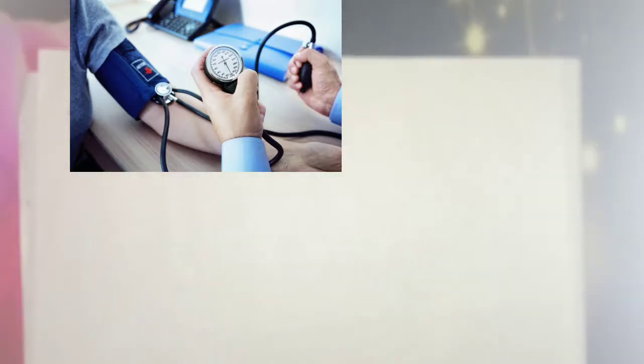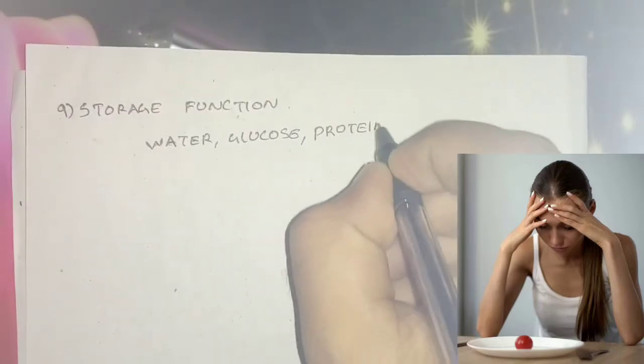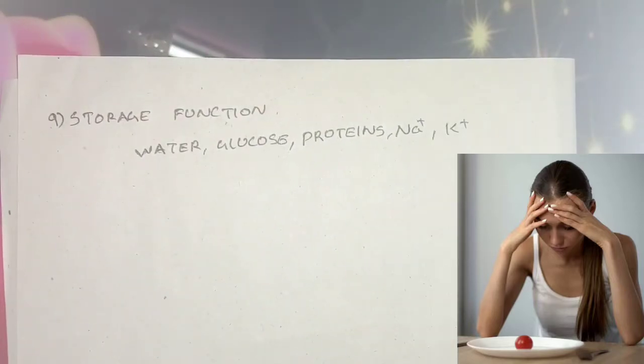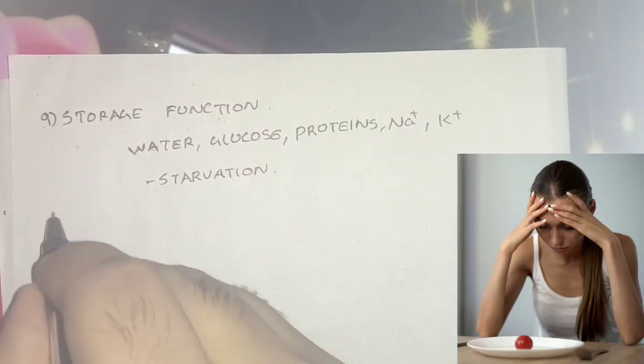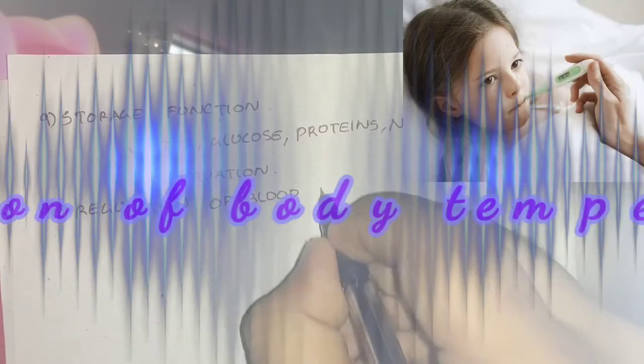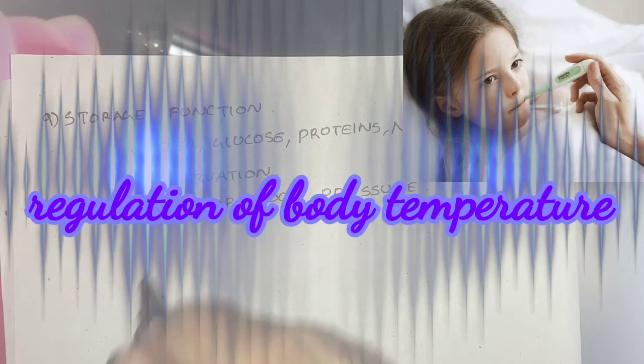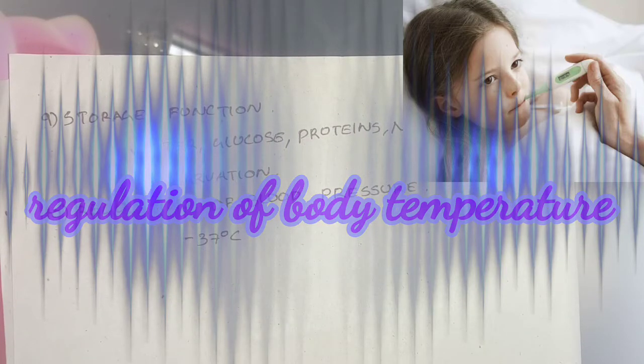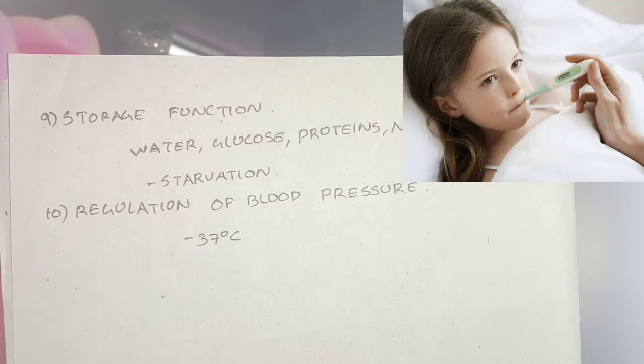Next is the storage function. Blood serves as the immediate source of substances like water, glucose, proteins, sodium, and potassium during starvation. Next is the regulation of body temperature—sorry, it is wrongly written here—and it is maintaining at a constant 37 degrees Celsius.